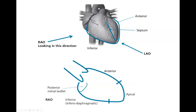In RAO you see well the LAD and PDA specifically. You do not see the septum well, and you do not see the posterolateral circumflex area. For an interventional board question, if they show you an LV gram with an akinetic inferior wall and ask which artery — it's the PDA specifically, not PLB. PLB and circumflex are not well seen in RAO. RAO splits ventricular and atrial area.